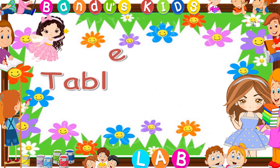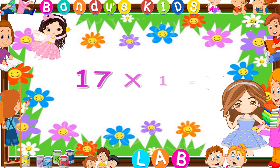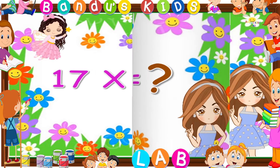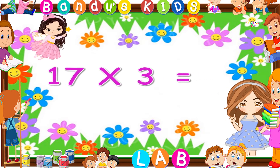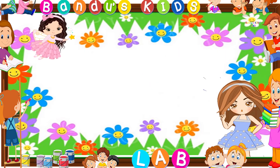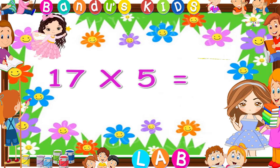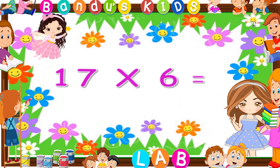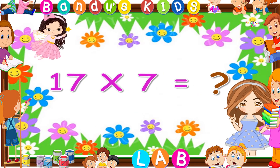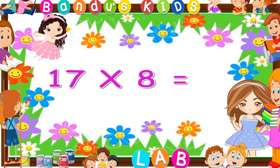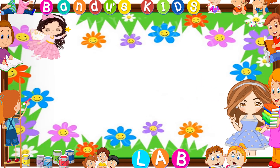Kids, now it's your turn to say the table of 17. 17 ones are... 17 twos are... 17 threes are... 17 fours are... 17 fives are... 17 sixes are... 17 sevens are... 17 eights are... 17 nines are... 17 tens are...